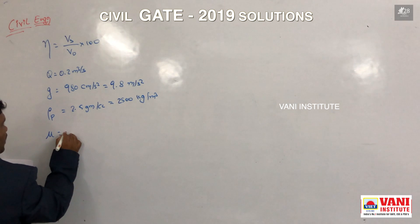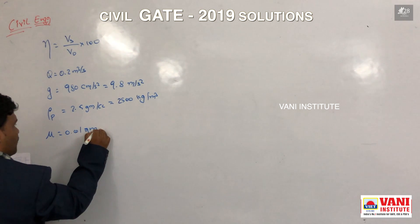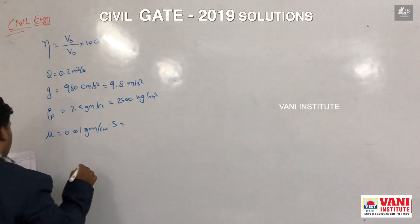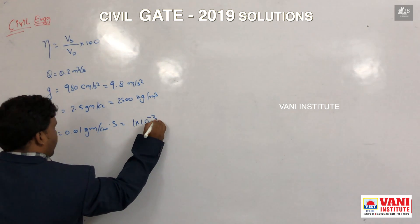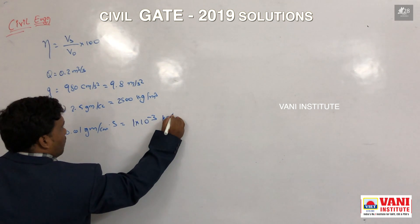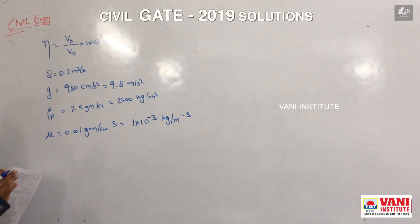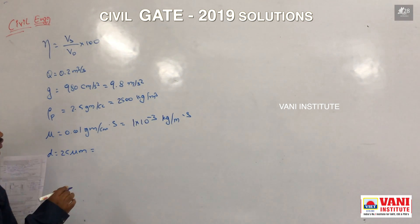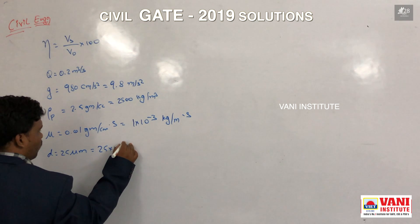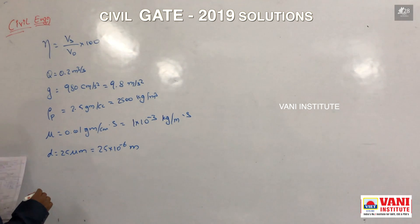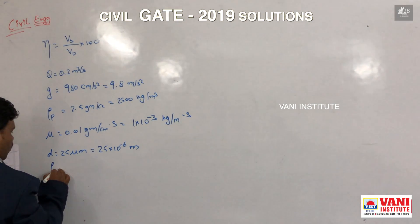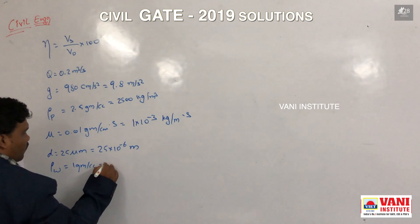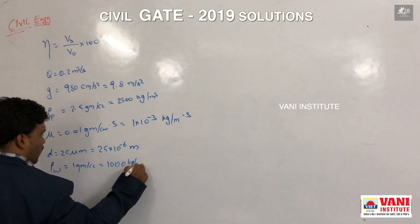Dynamic viscosity mu is given as 0.01 gram per centimeter second; if converted to kg per meter second, it will be 1 × 10⁻³ kg per meter second. The diameter of the particle D is given as 25 microns; if converted to meters, it will be 25 × 10⁻⁶ meter. The density of water is given as 1 gram per cubic centimeter; if converted to kg, it will be 1000 kg per meter cube.